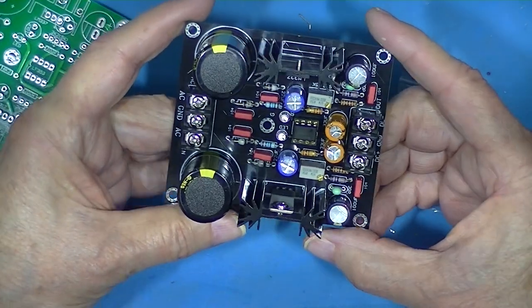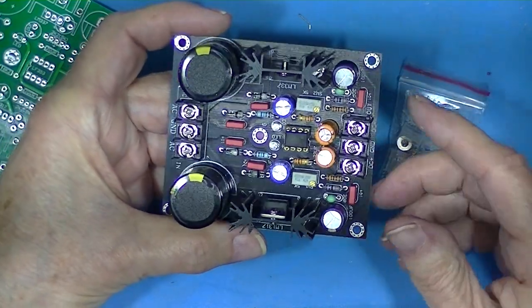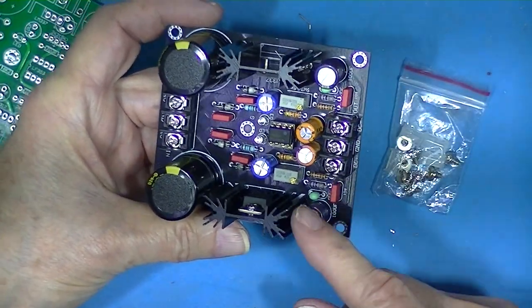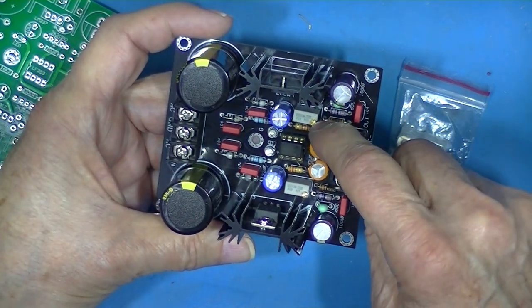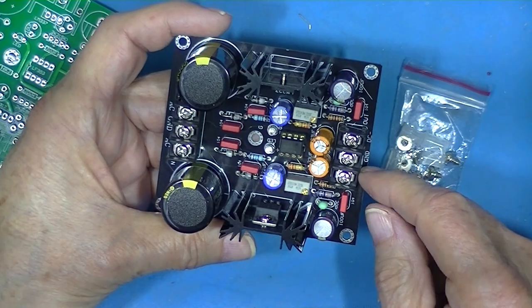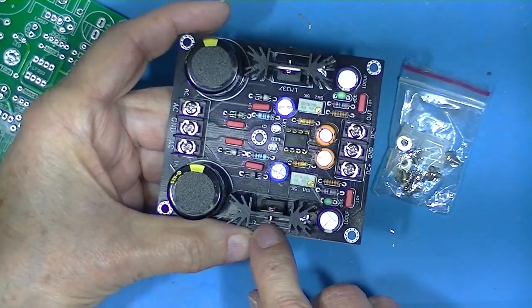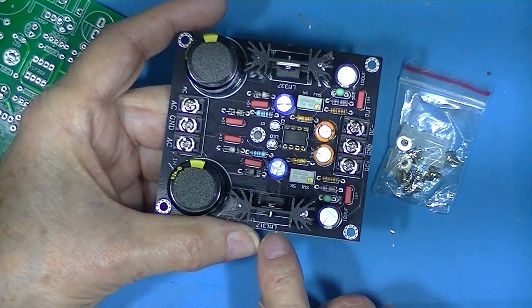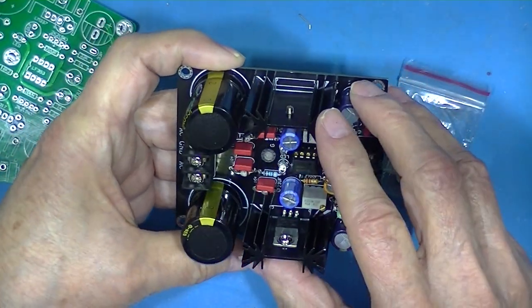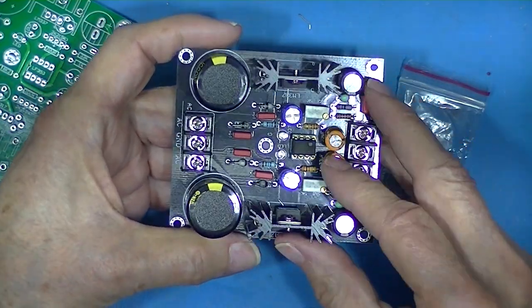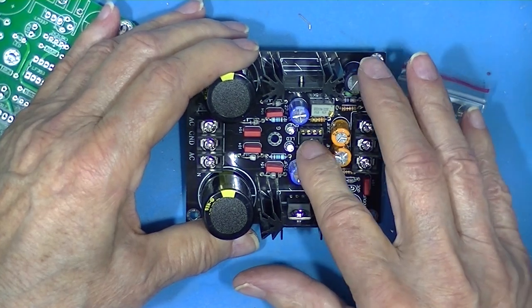So this is a little dual rail power supply - negative, positive. The individual rails are adjusted by these potentiometers, and this is the positive device which is an LM317, and this is the negative device which is an LM337.